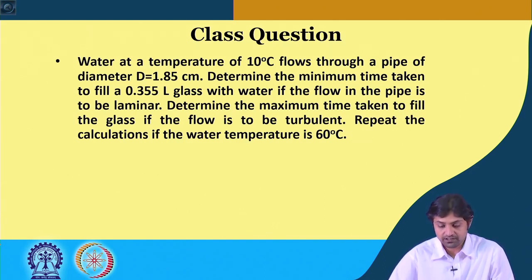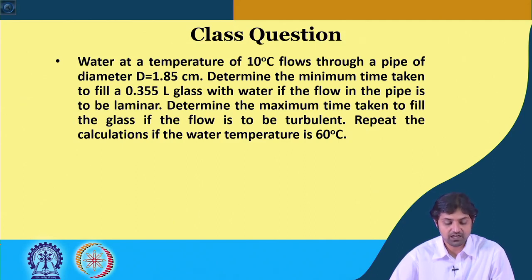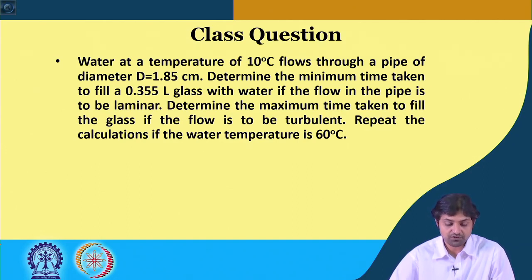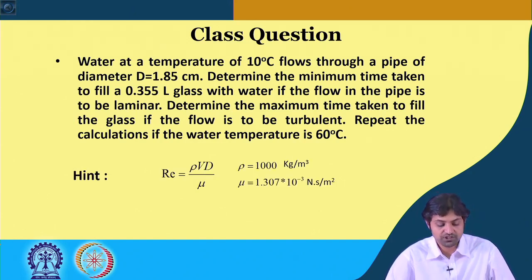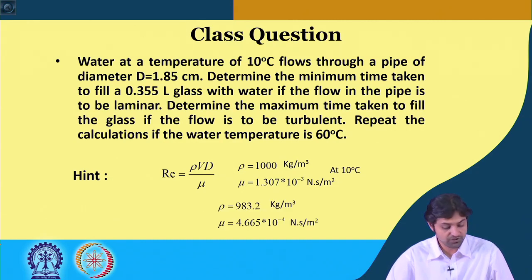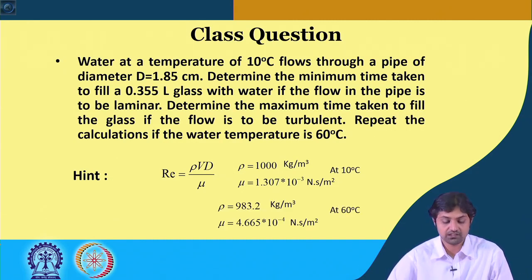Here is a question: water at a temperature of 10 degrees centigrade flows through a pipe of diameter 1.85 centimeters. Determine the minimum time taken to fill a 0.355 liter glass with water if the flow in the pipe is to be laminar. We are also given rho and mu at 10 degrees centigrade. The Reynolds number formula is rho V d by mu.